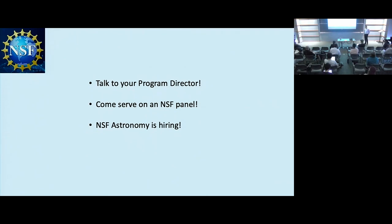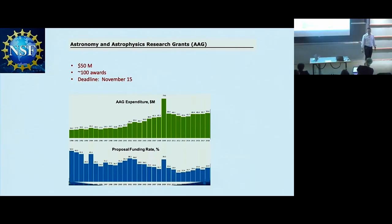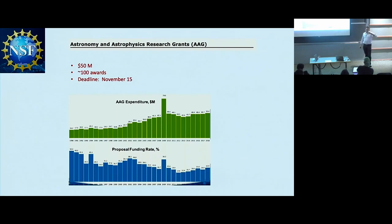Q: Is there a significant increase in AAG expenditure since the pandemic compared to 2015–2018? A: No, it's been pretty flat — around $50 million the last few years. The number of proposals has been going up though, so the budget should also grow. That's the problem.